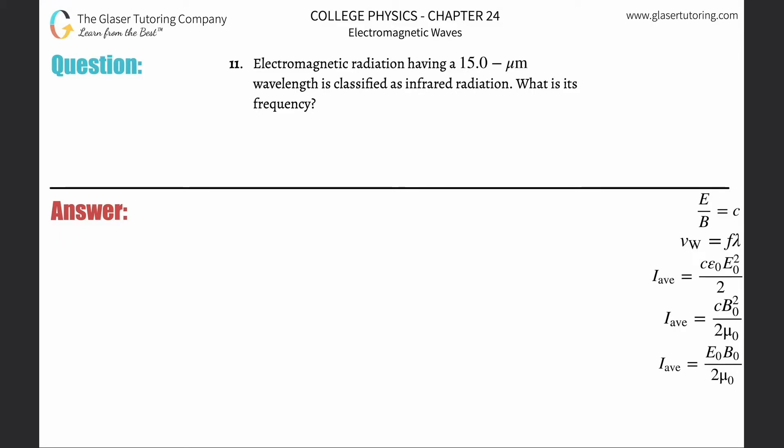Number 11: Electromagnetic radiation having a 15 micrometer wavelength is classified as infrared. What is its frequency? All right, so the formula we need here relates the speed of the wave to the frequency and its wavelength.